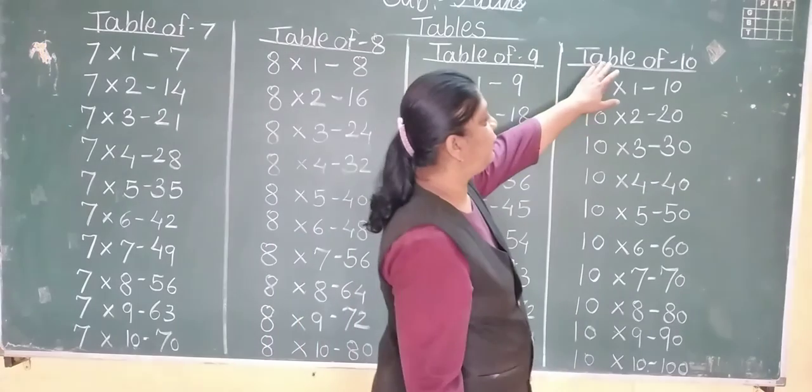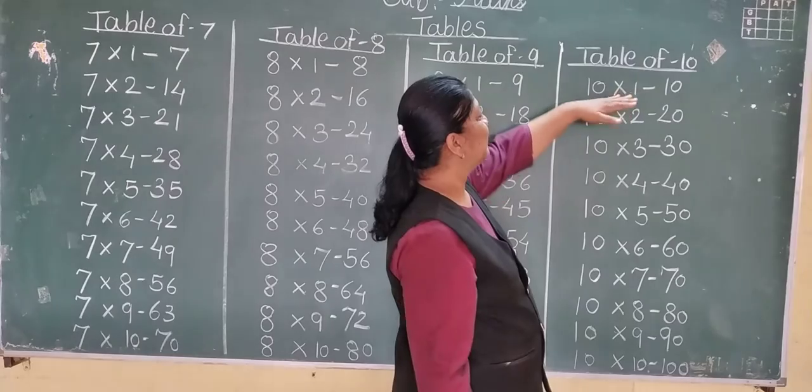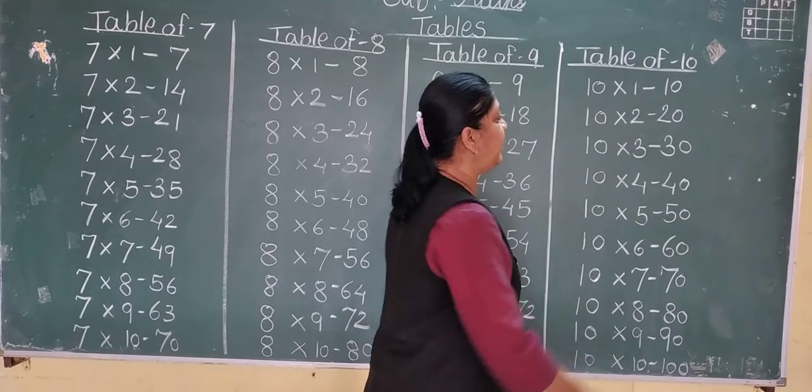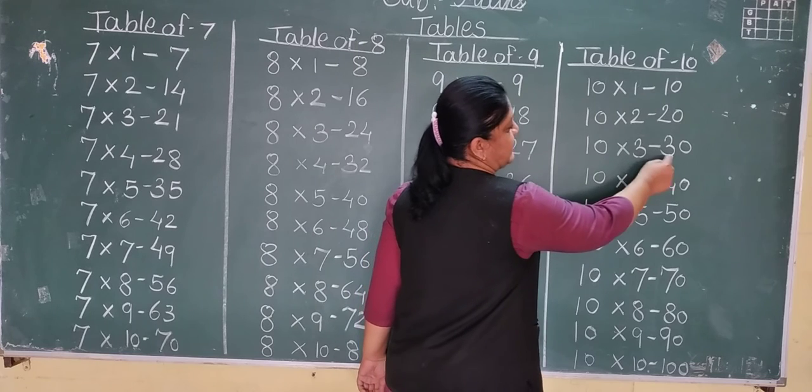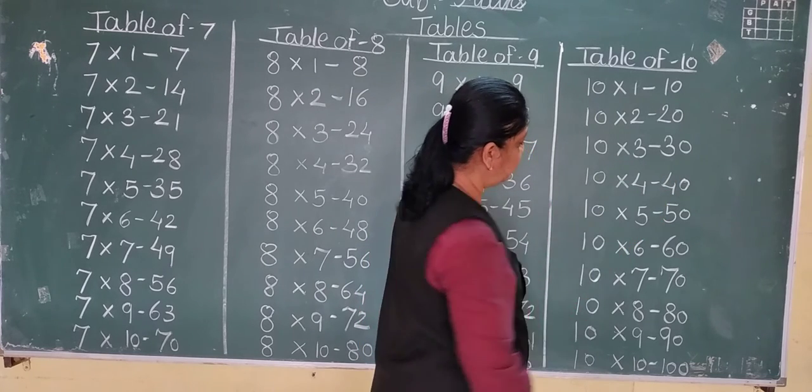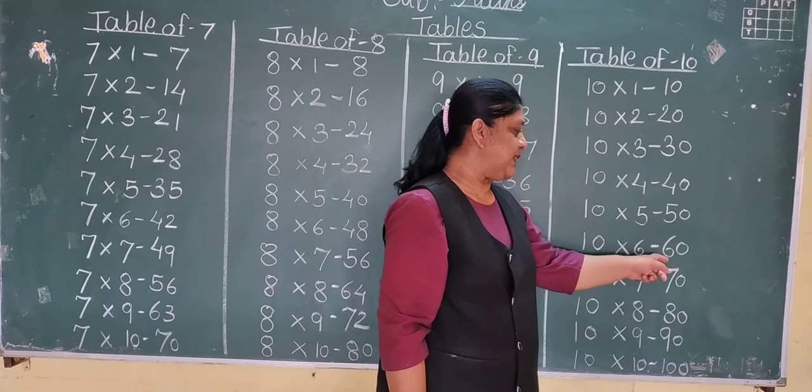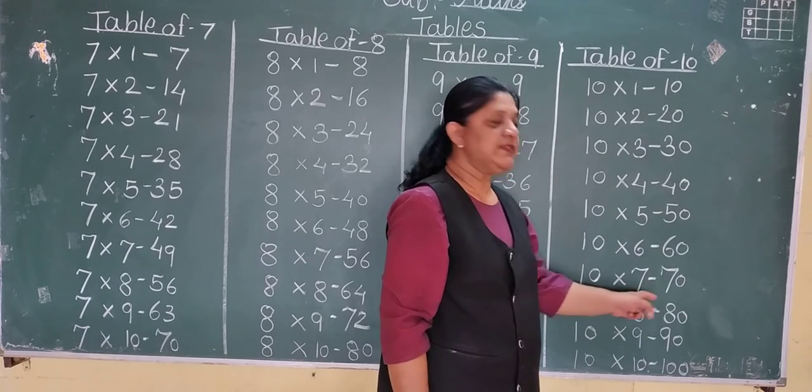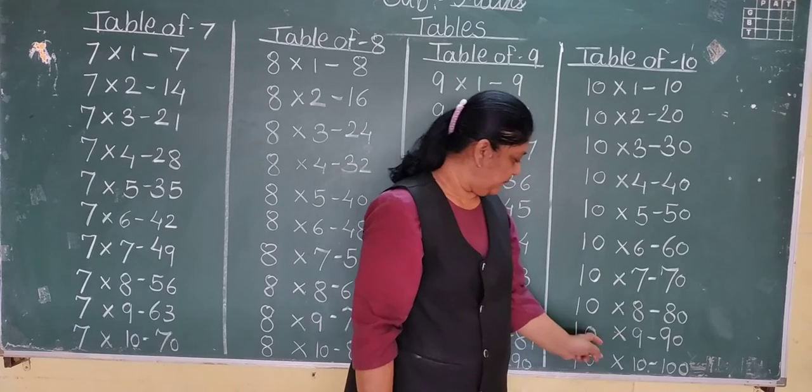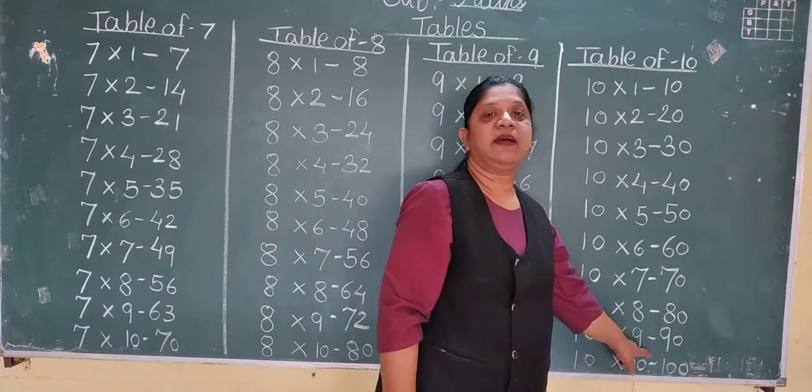Now table of 10. It is very easy table. 10 1s are 10, 10 2s are 20, 10 3s are 30, 10 4s are 40, 10 5s are 50, 10 6s are 60, 10 7s are 70, 10 8s are 80, 10 9s are 90, and 10 10s are 100.